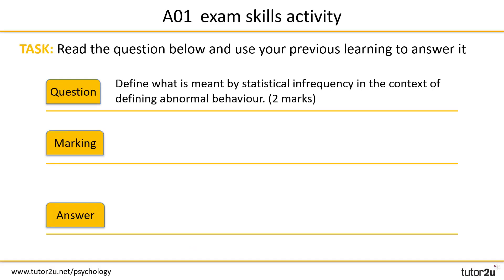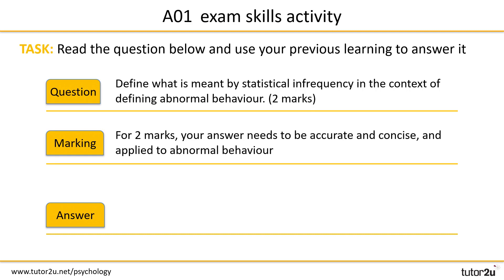Let's take a look at your AO1 Scales first. Read the question on the screen and use your previous learning to form a response. To help, here are some tips for preparing a good answer, or you may use these for self and peer assessment. So for two marks, your answer needs to be accurate, concise, and applied to abnormal behaviour — and it's this last point that is crucial.